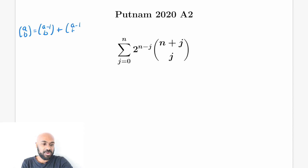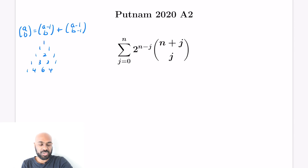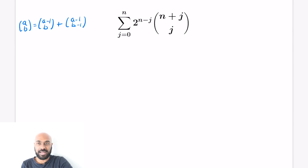If you have a general binomial coefficient a choose b, it's equal to a minus 1 choose b, plus a minus 1 choose b minus 1. You can see this from Pascal's triangle — every element is the sum of the two elements above it, and all these numbers happen to be binomial coefficients themselves.